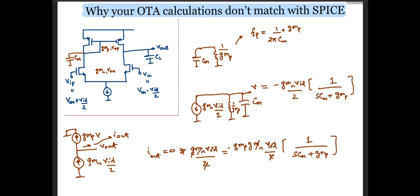It turns out that the zero lies at minus 2 Gmp by Cm, which is twice the pole frequency. In summary, the current mirror capacitor introduces a set of a pole and a zero. Let's quickly look at the effect of the pole and the zero on the phase.